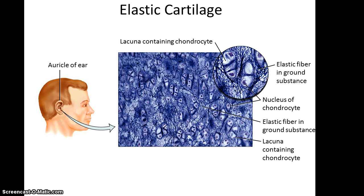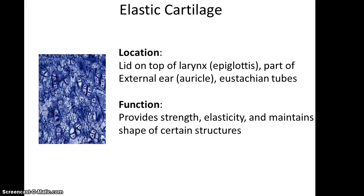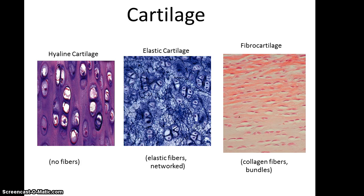Elastic cartilage features both lacunae — the cavities in which chondrocytes are located — and many branching fibers, as elastic fibers are very dominant in this type. Elastic cartilage is found in the lid on top of the larynx known as the epiglottis, in parts of the external ear, and in the eustachian tubes. It helps provide strength, elasticity, and maintain the shape of certain structures. To summarize: hyaline cartilage looks smooth with no visible fibers; elastic cartilage shows networked branched elastic fibers; and fibrocartilage shows collagen fibers bundled together.